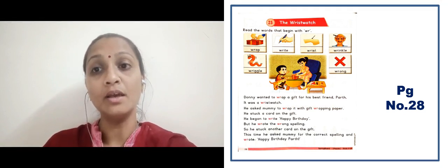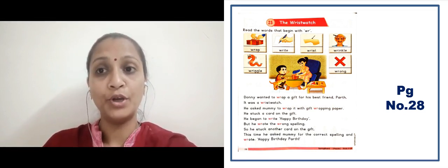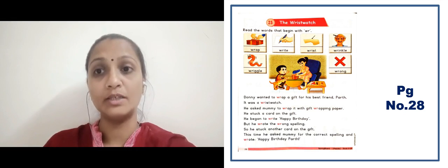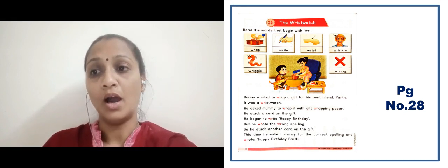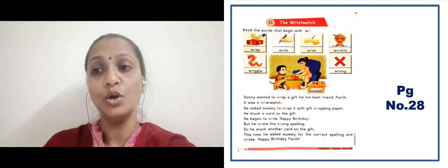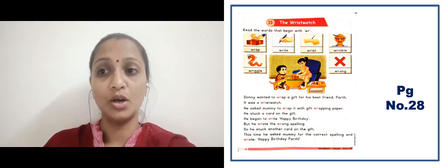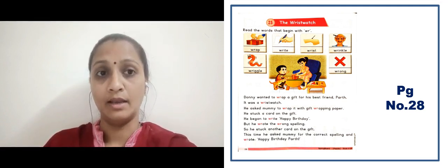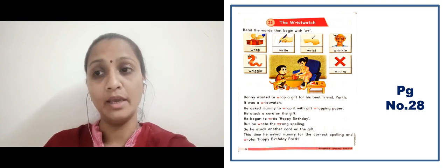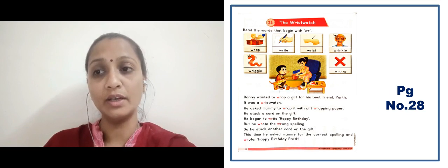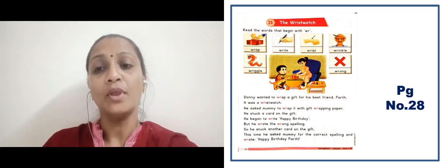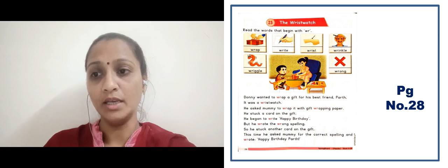After that, there is 'wrinkle' — hamare forehead ke upar jo lines banti hain, that is called wrinkle. After that, here there is 'earthworm' — it's a kind of insect. After that, here there is the word 'wrong' — wrong yaani galat.